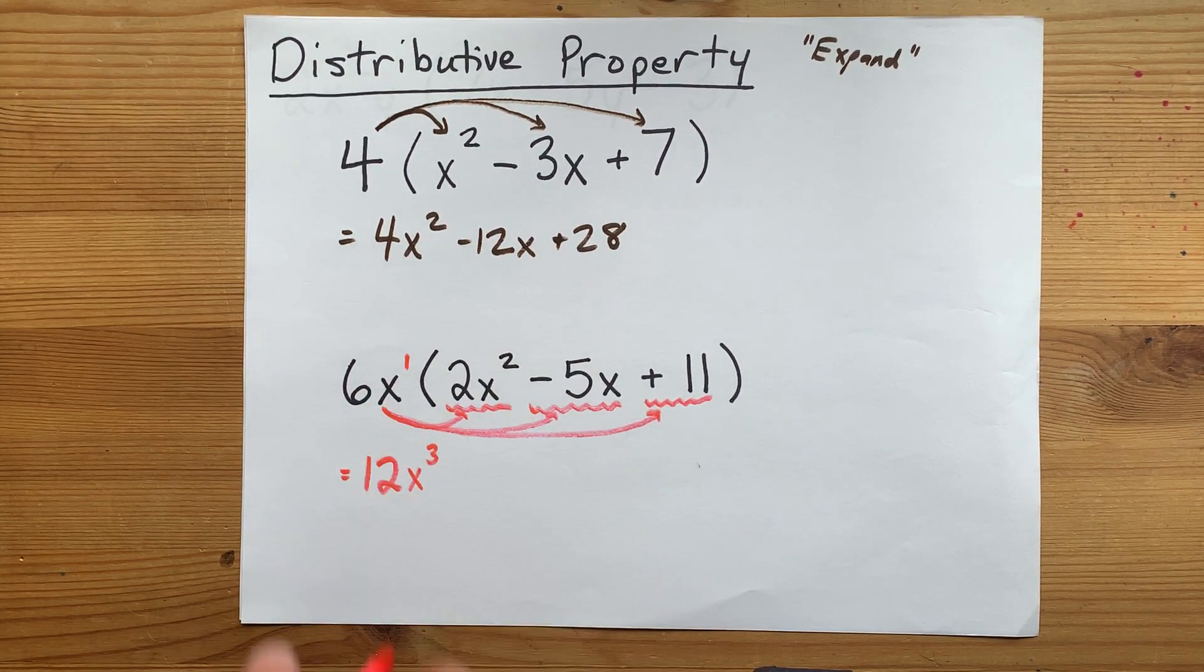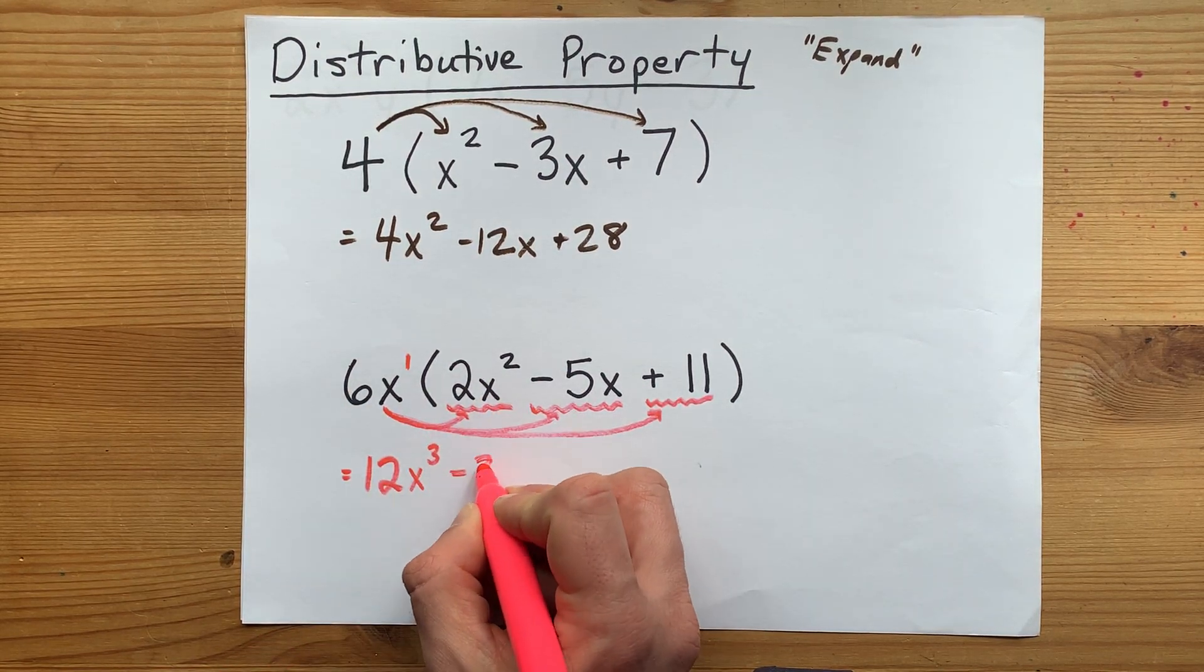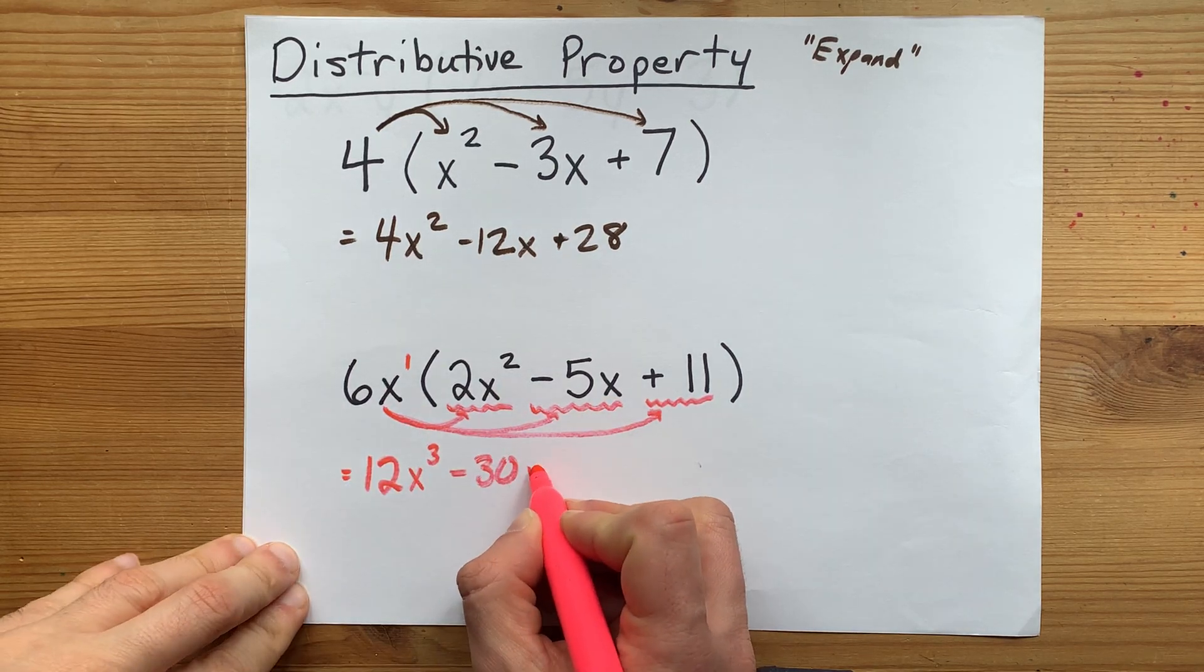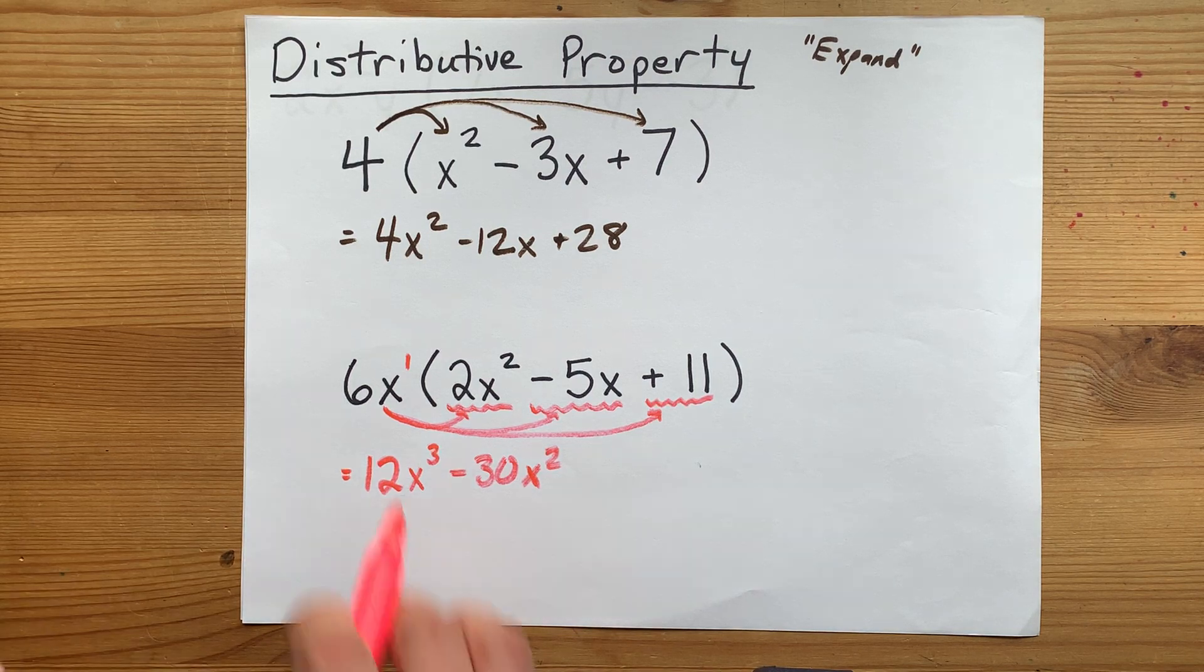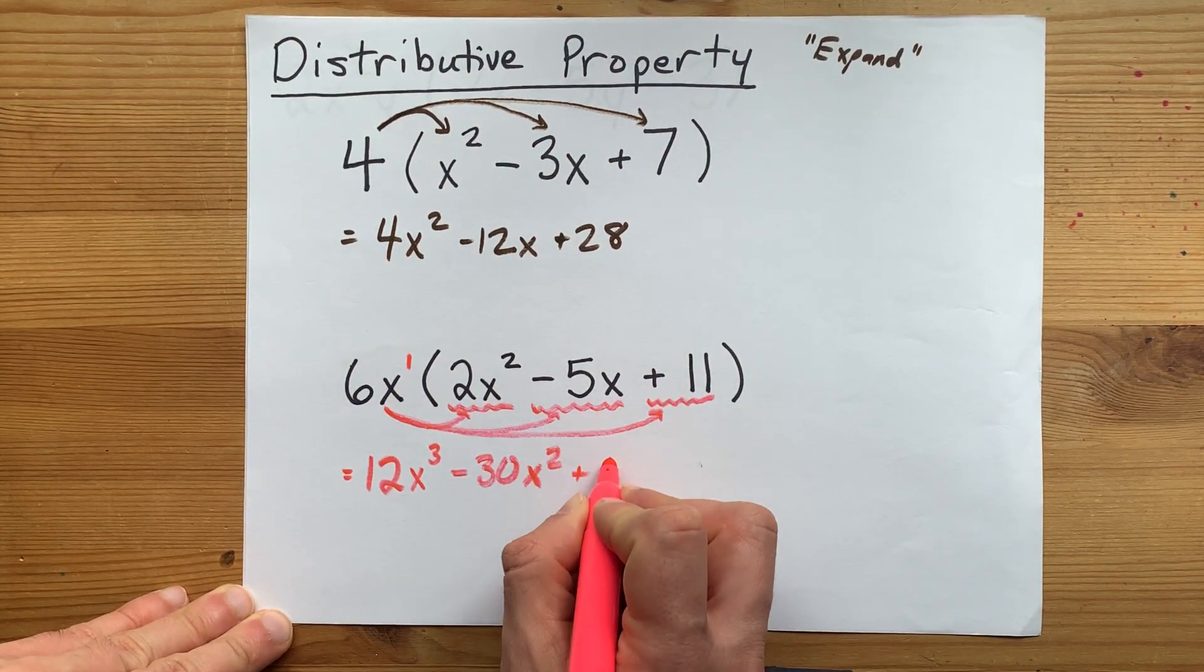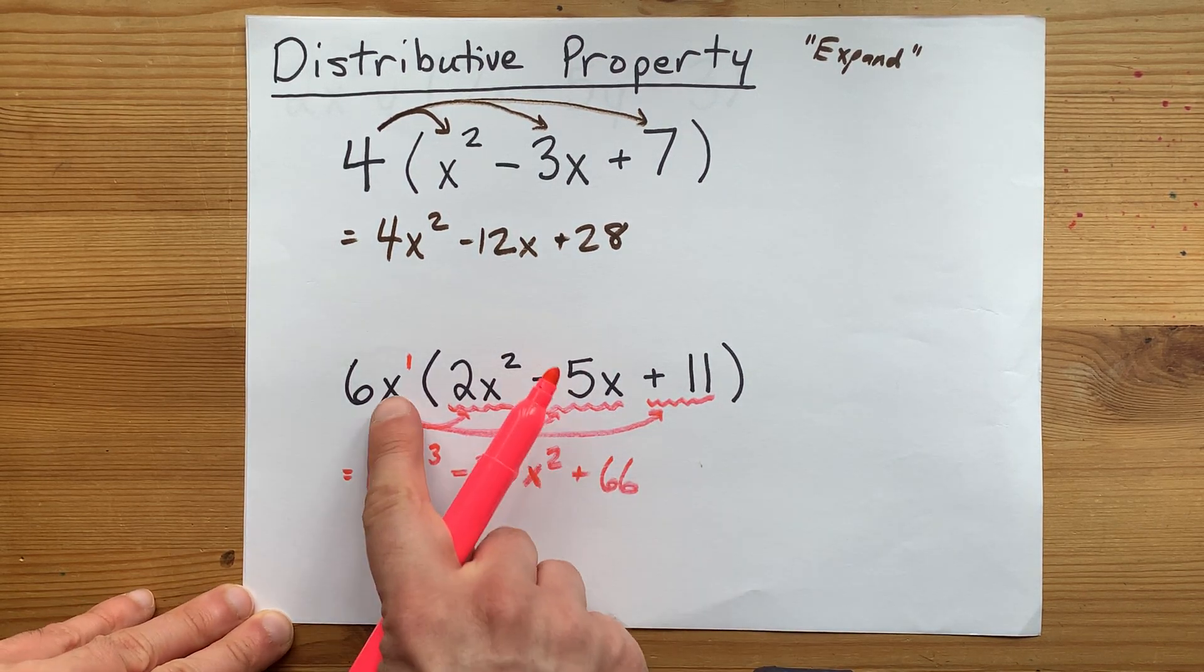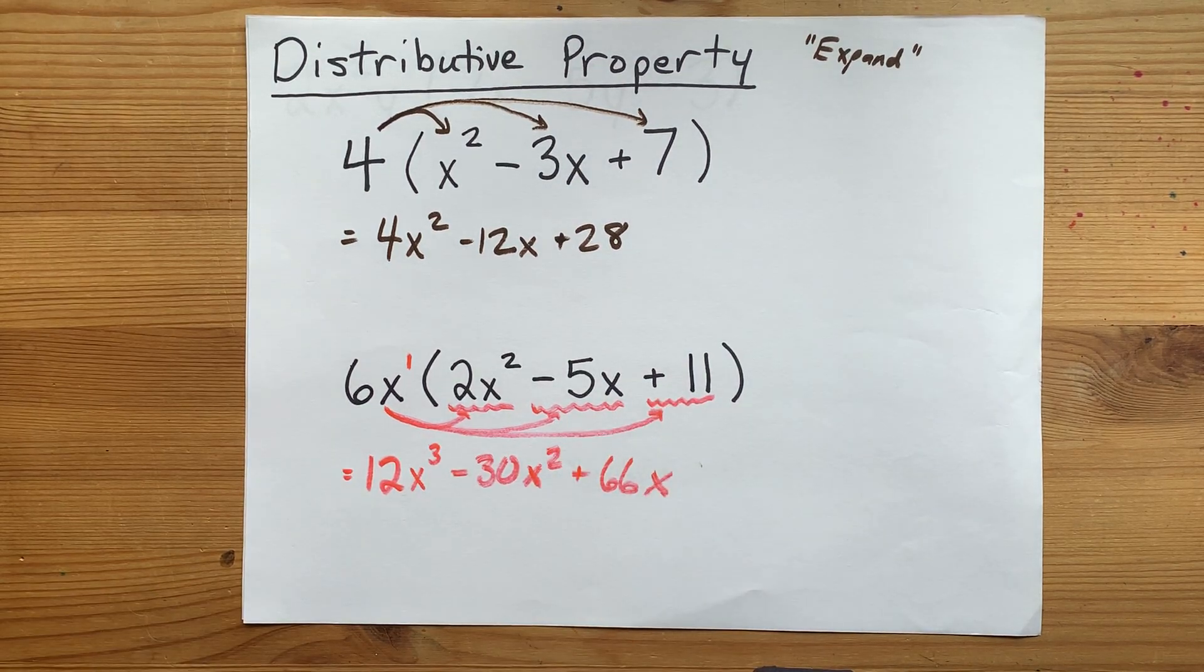6 times negative 5 is negative 30, and the x combined with that extra x is what gives you an x to the 2, or an x squared. 6x times 11. The numbers multiply. 6 times 11 is 66. Use your calculator if you have to. And x combined with nothing is just a regular x. Nice.